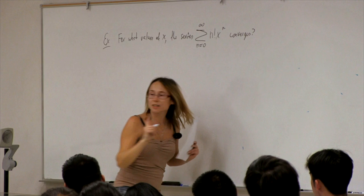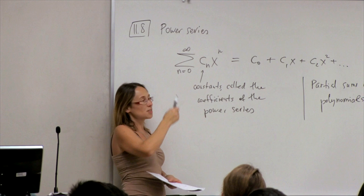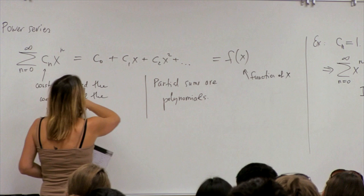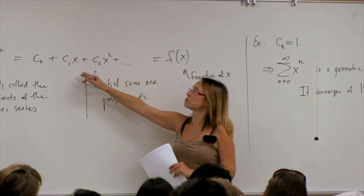One remark: we start our summation with n equals 0, whereas before we usually started with 1. This is a convention when talking about power series. This way you can see that the first term is actually a constant, and the polynomial will contain a constant term.